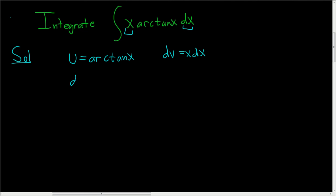So computing du, we end up with 1 over 1 plus x squared dx. And computing v from dv, we integrate, so we simply get x squared over 2.